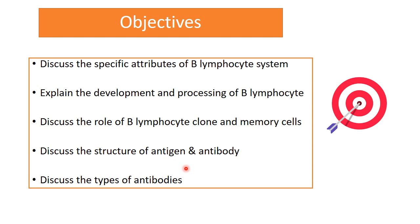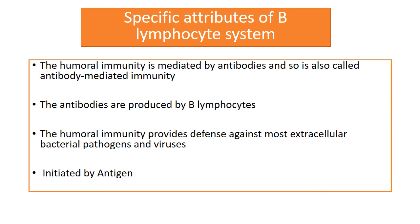You would also be able to discuss the structure of antigen, antibody, and their types. As we have discussed in the previous lecture, humoral immunity is attributed by the B lymphocytes which secrete antibodies into the blood in order to combat extracellular bacterial pathogens and viruses. But all of this mechanism is antigen specific — it is initiated by antigen. Now, what is an antigen?